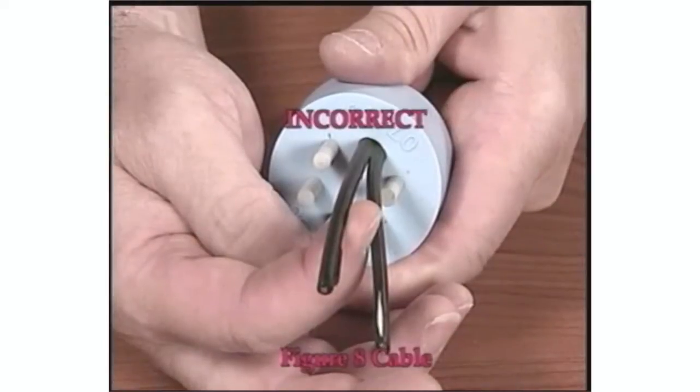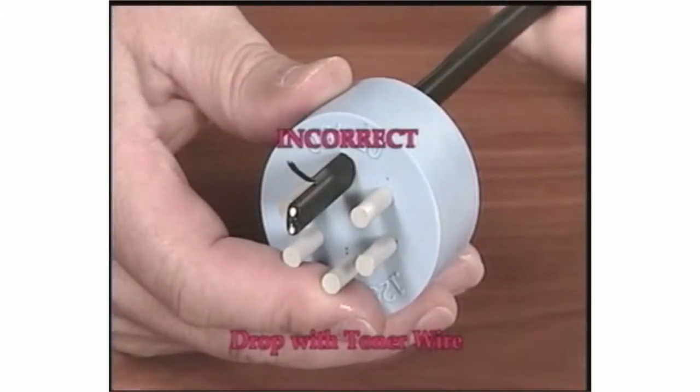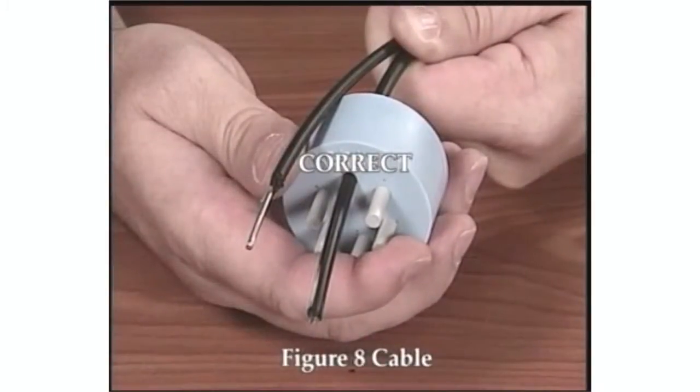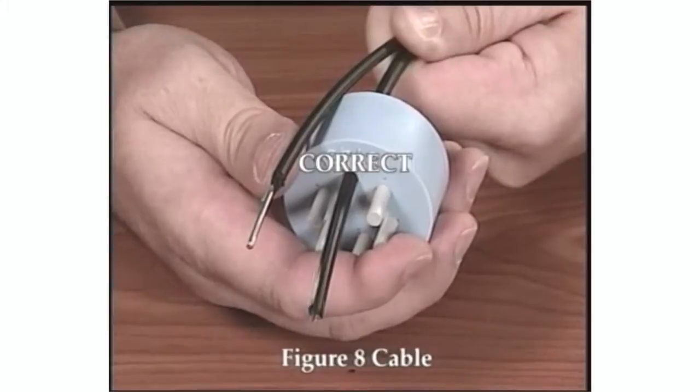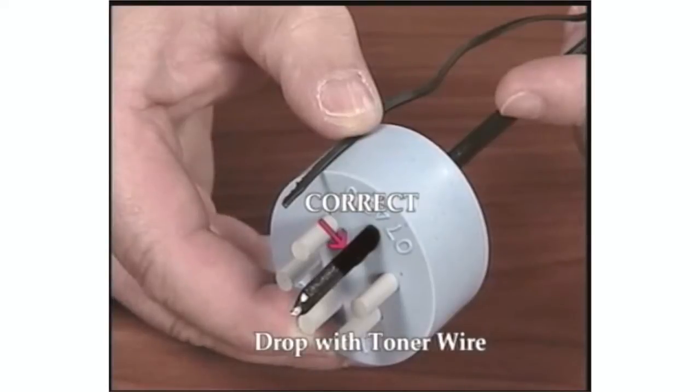If your application requires the use of a figure-eight style cable or cable with a toner wire, the messenger or toner wire must be removed in the area where the grommet will be installed. Remove any material burrs that could affect the grommet seal prior to inserting the cable into the grommet.